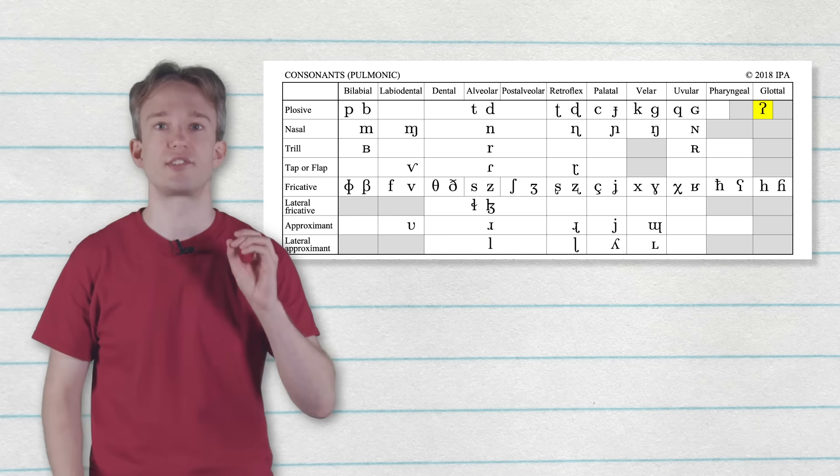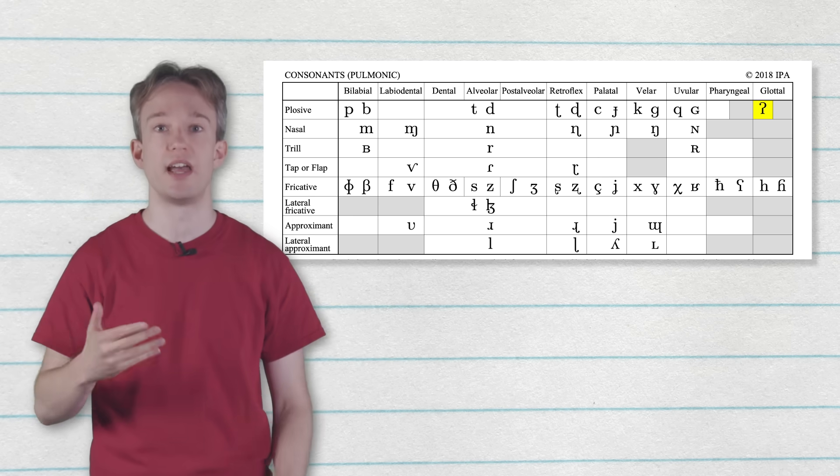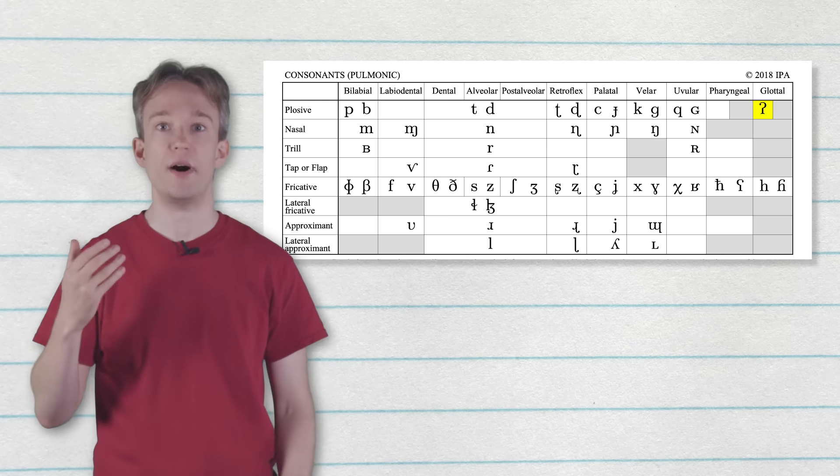At the end of the row is the glottal stop, which is closing off the airflow in your throat, and it happens in English when you say, uh-oh. Depending on your accent, it also occurs in mountain, Hawaii, or bottle.